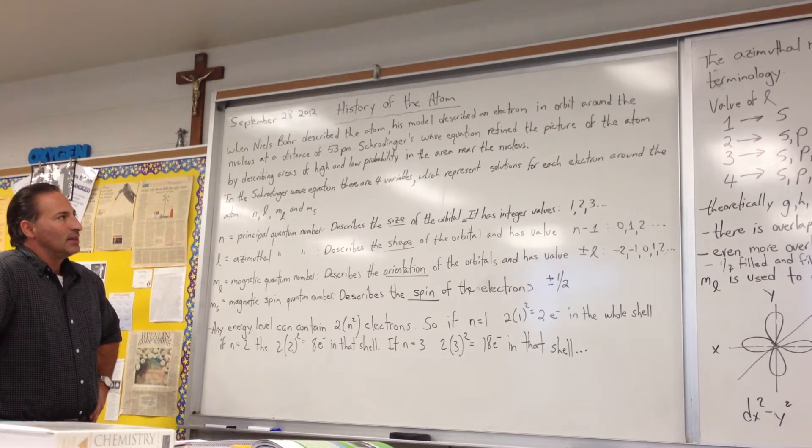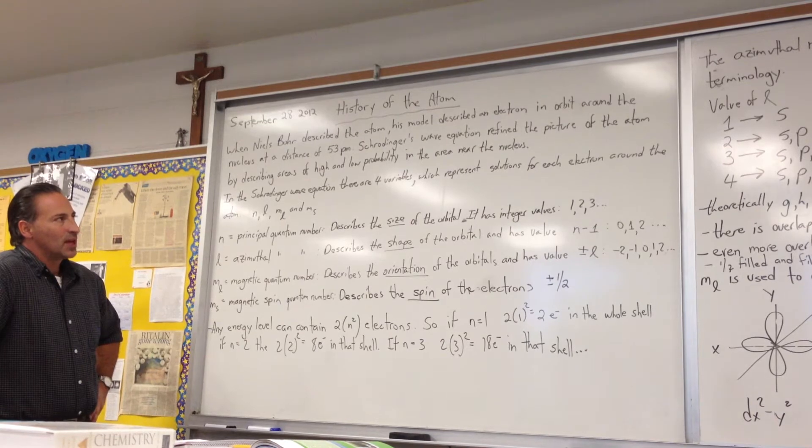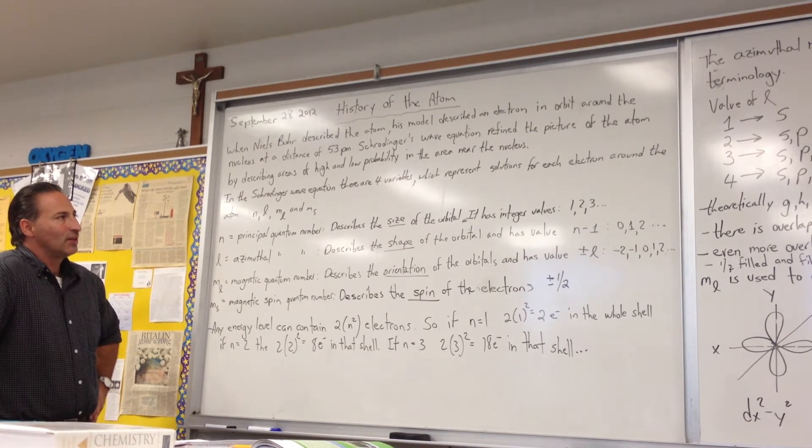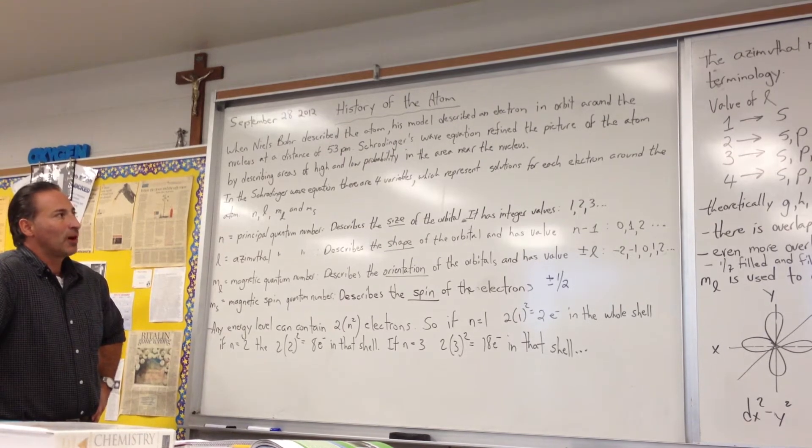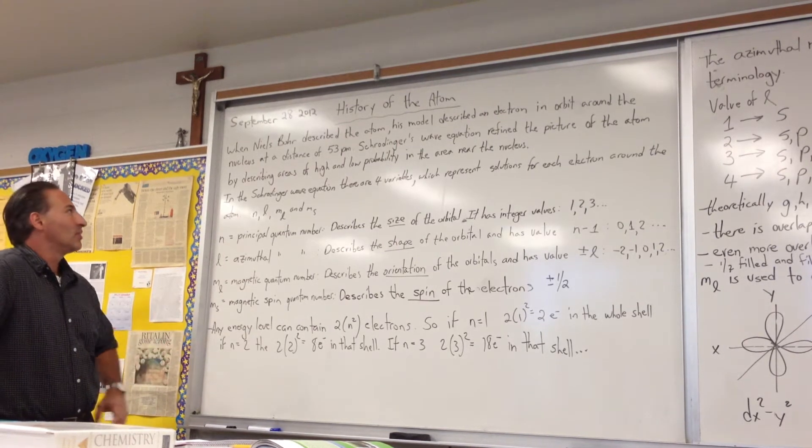So we had to refine the idea, and this came about when Schrödinger's wave equation calculated that the electrons could actually occupy areas of high and low probability in the area of the nucleus.